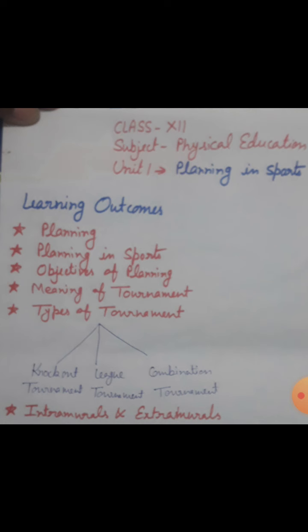The combination tournament can be done by the following methods: first is league-cum-knockout, second is knockout-cum-league, third is knockout-cum-knockout, and fourth is league-cum-league.